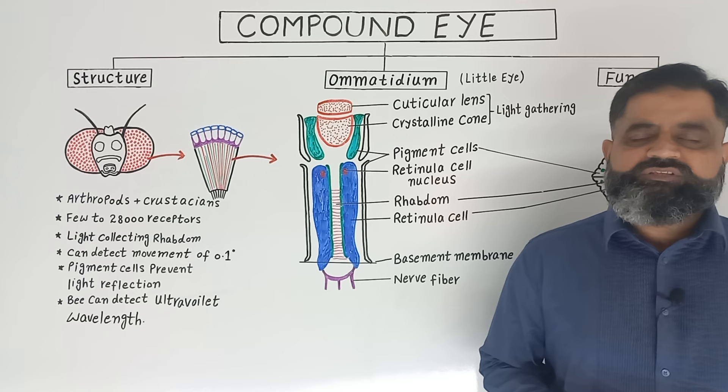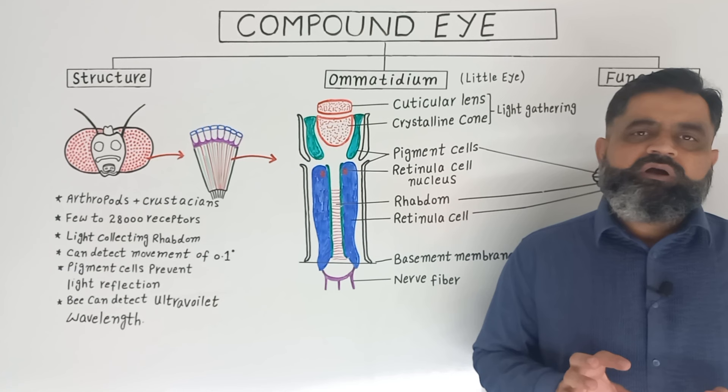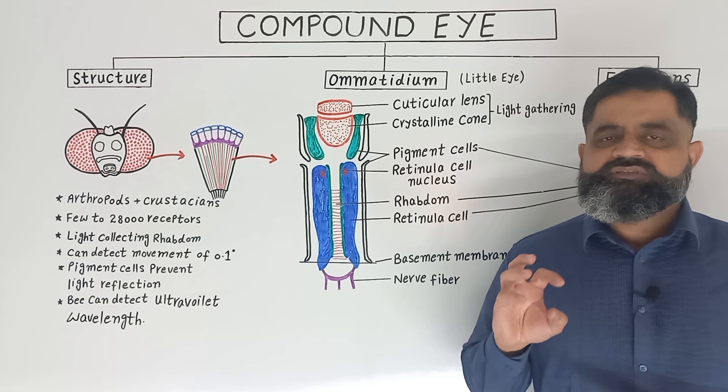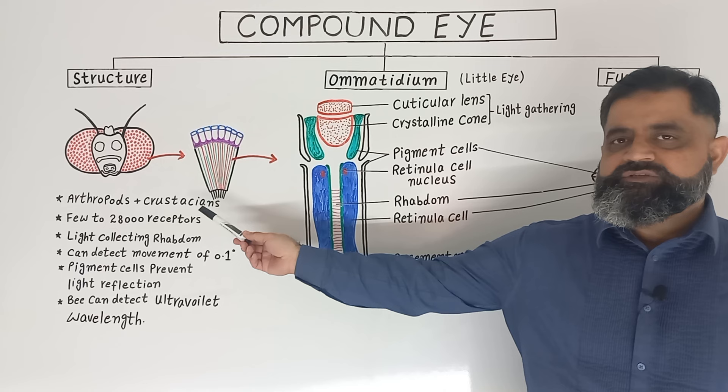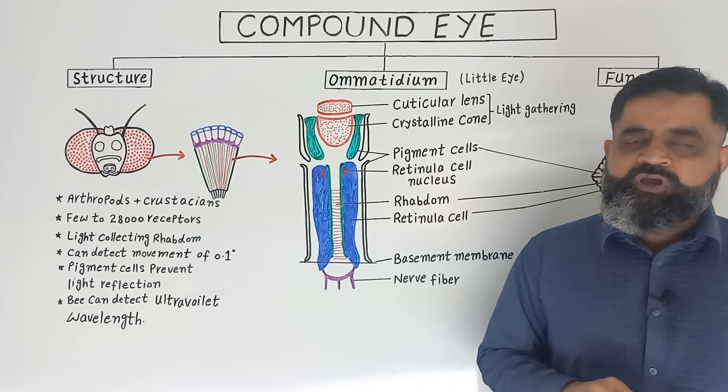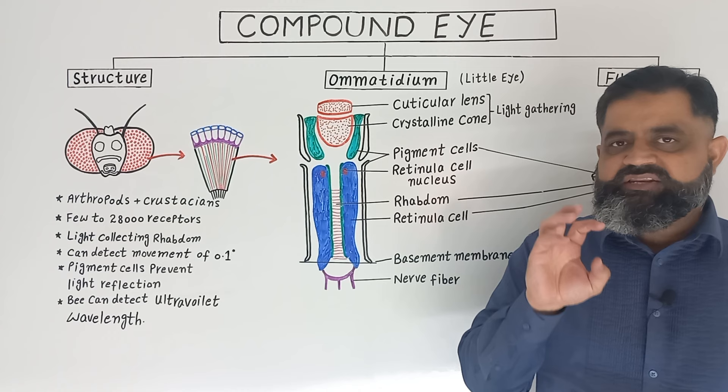Hello, in this video lecture we are going to discuss the structure and function of compound eyes. Compound eyes are a little bit different in structure and function as compared to simple eyes. Compound eyes are present in arthropods, crustaceans, and some members of mollusks.